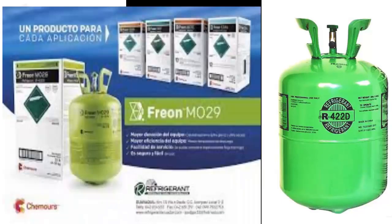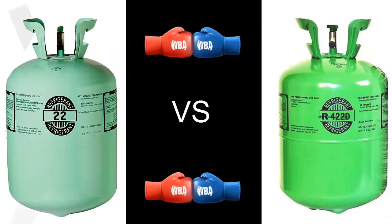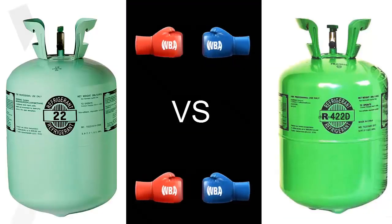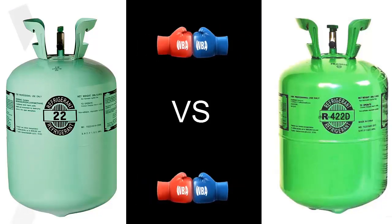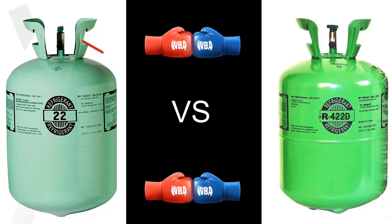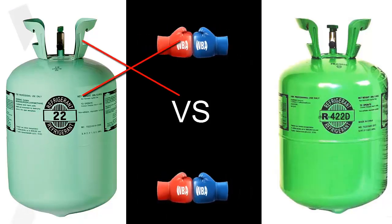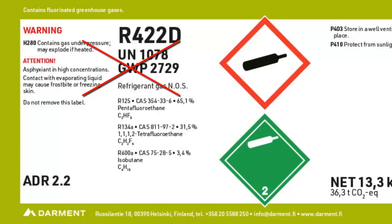Refrigerants in the R422 family are also known by other names such as Freon Missouri 79, M049, M029, among others. However, not everything is perfect with the R422 family, as they have a relatively high global warming potential (GWP) due to the presence of component R125.